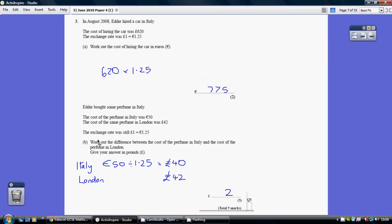Now for part B, the cost of the perfume initially was this, in London was that. That's the exchange rate. Work out the difference between them and give your answer in pounds. So we need to be working in pounds. So obviously London is 42 pounds.